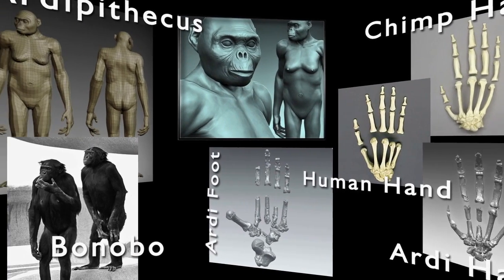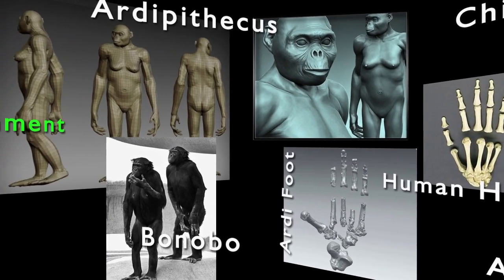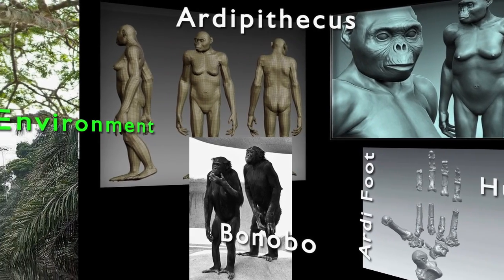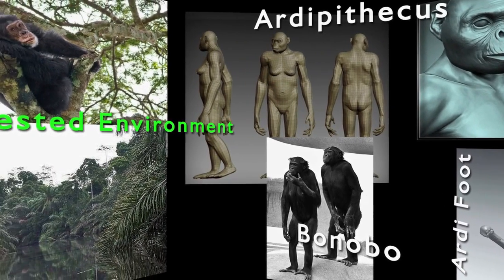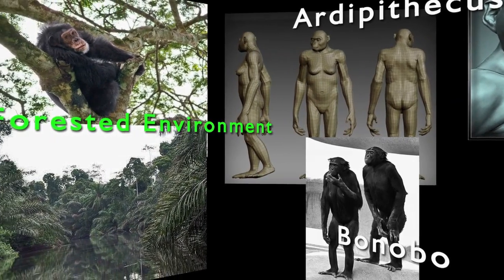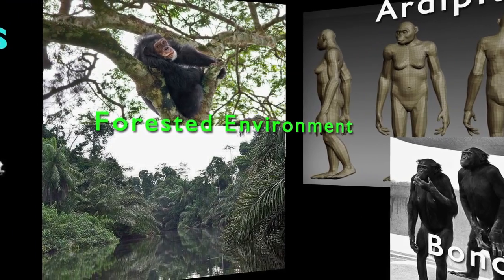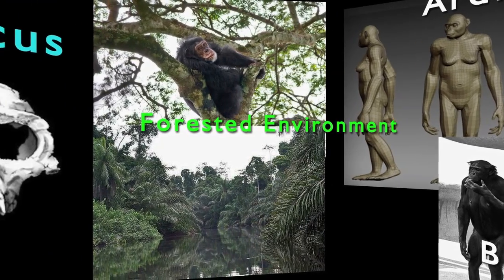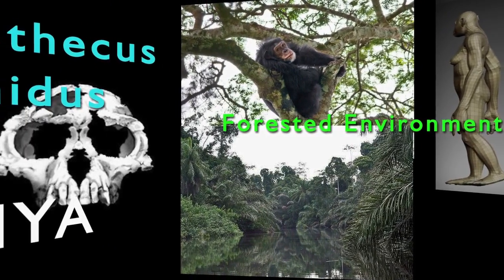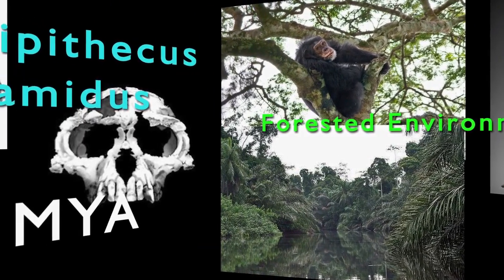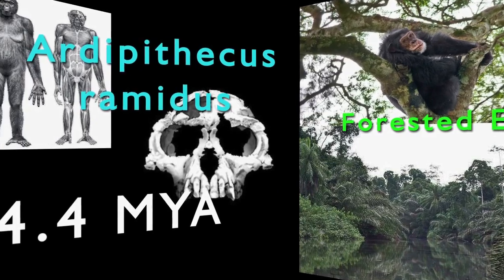From an appearance standpoint, Ardipithecus kadabba was about the same size as a modern chimpanzee. It probably walked upright part of the time, but was still an agile climber. It most likely lived in a forested environment with lakes or rivers nearby and swamp-like conditions present.